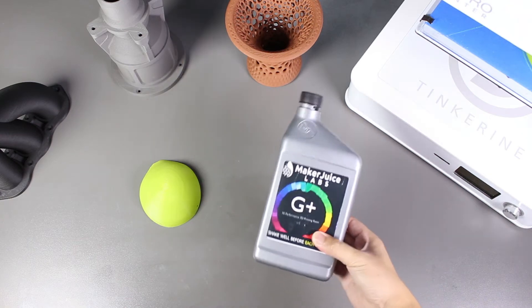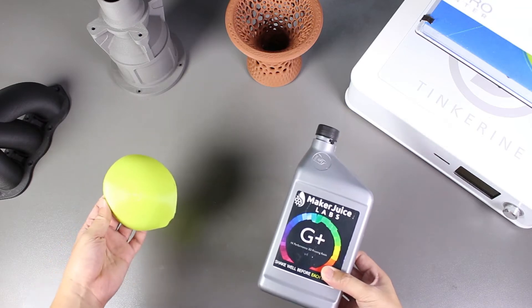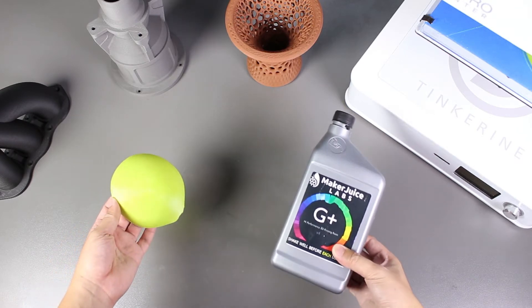Welcome to another episode of Tinkering Experiments. In this episode, we will be using 3D printing resin to smooth out our 3D printed PLA part.